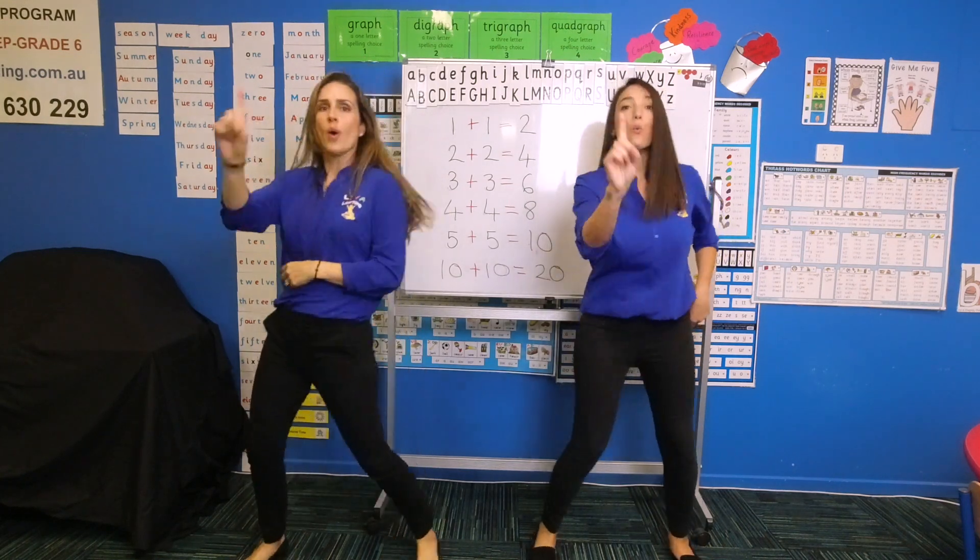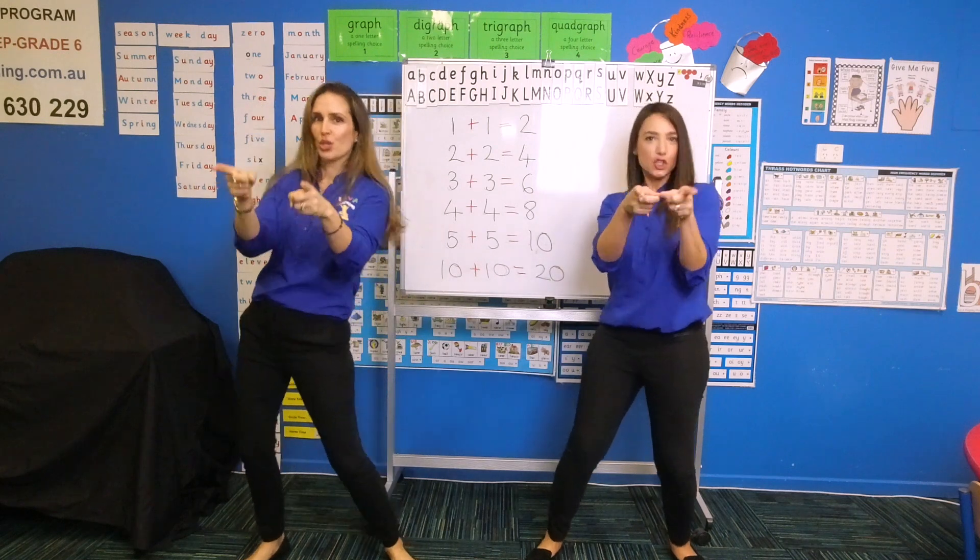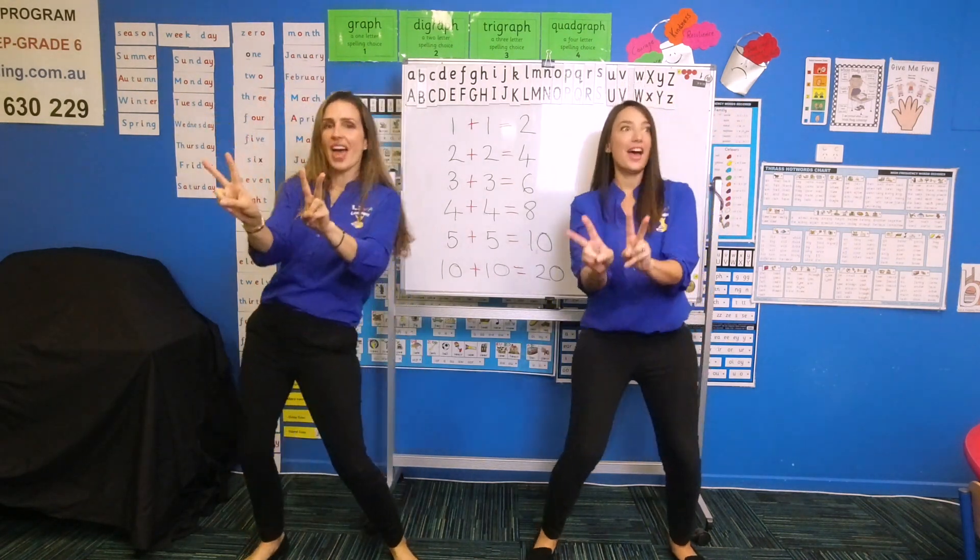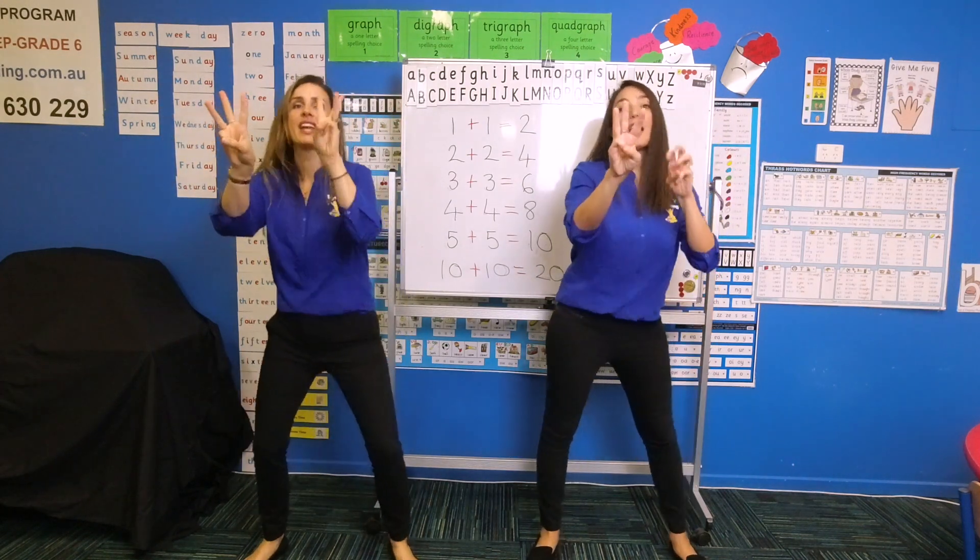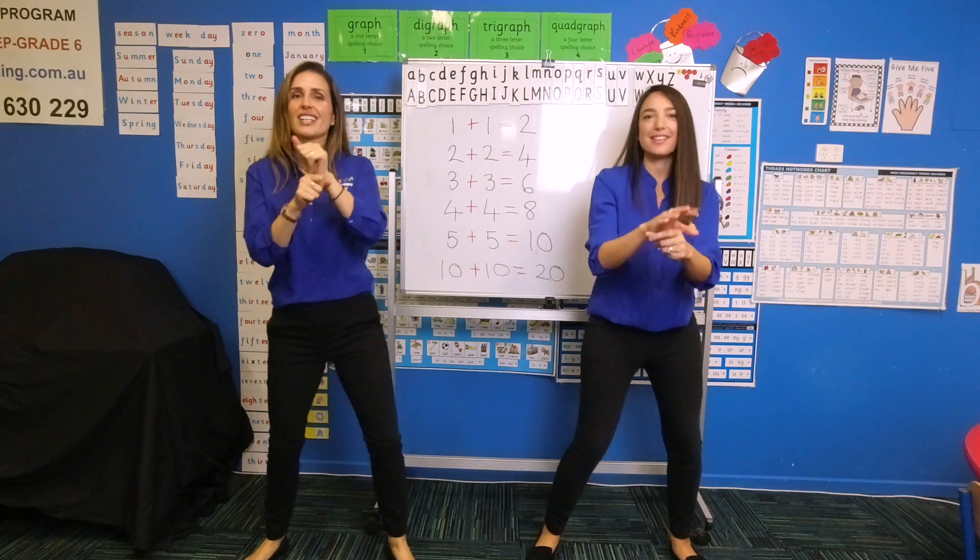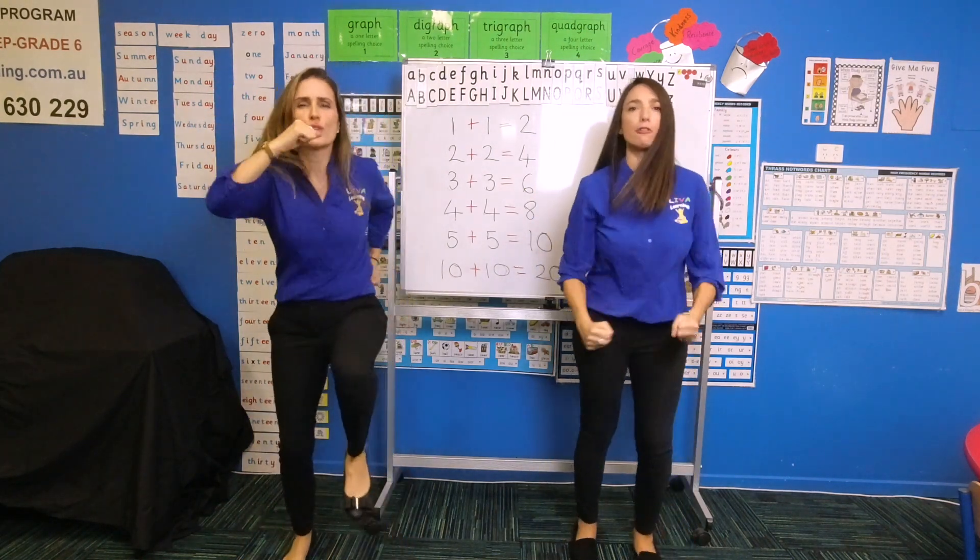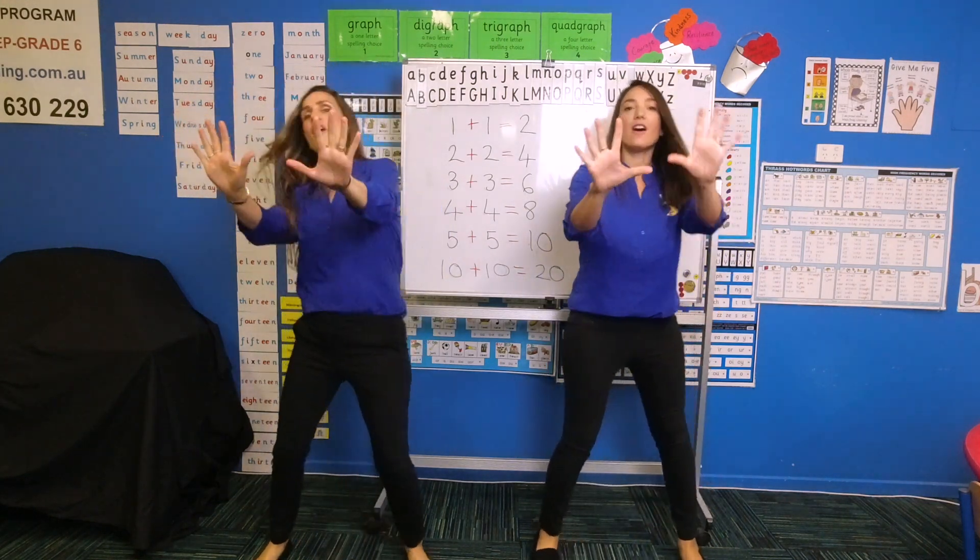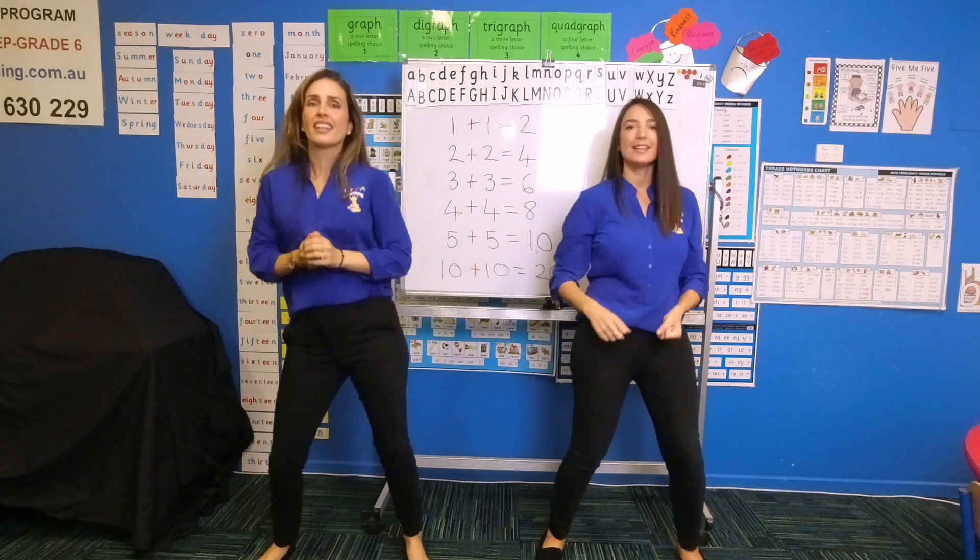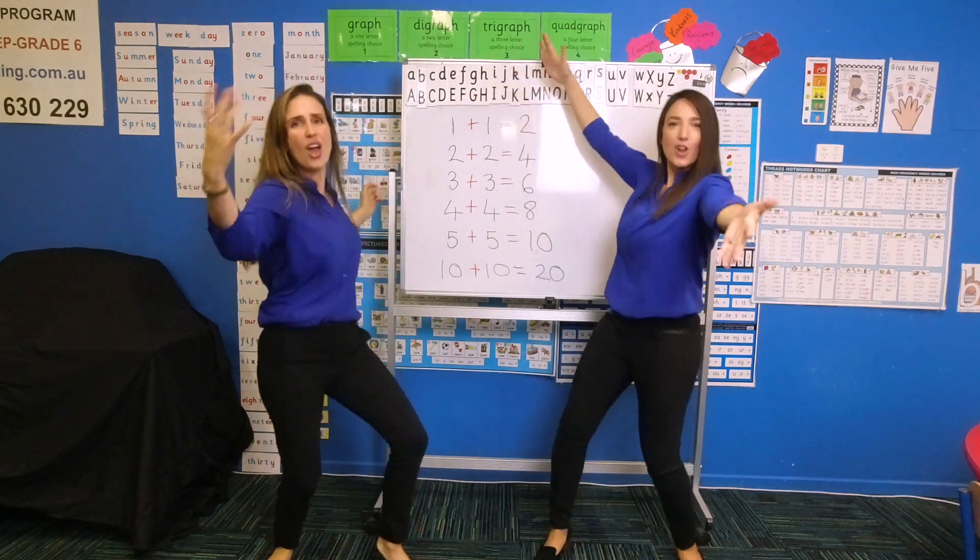Let's go and hear you singing. 1 and 1 is 2, that's for me and you. 2 and 2 is 4, that's a couple more. 3 and 3 is 6, a bag of party tricks. 4 and 4 is 8, hurry up we're going to be late. 5 and 5 is 10, a big fat hen. 10 and 10 is 20, we know plenty.